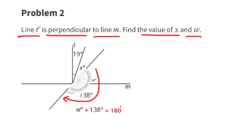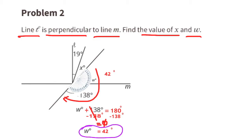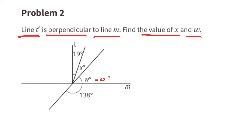We need to subtract 138 from both sides of the equal sign. 138 minus 138 is 0, so on the left side we're left with w, and on the right side we're left with 42 degrees. So we know that w is 42 degrees.